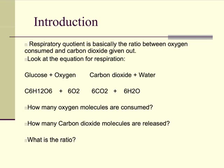Next up, respirometry — how we can measure the rate of respiration and work out what substrate an organism is using. From GCSE you might remember RQ, the respiratory quotient, which is the ratio between the oxygen consumed when respiring a substrate and the carbon dioxide given out.